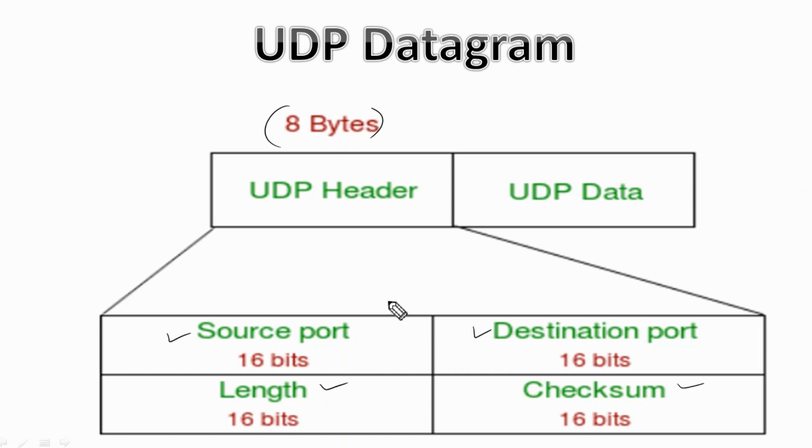In the UDP header, the source port is a 2-byte long field used to identify the port number of the source. The destination port is also a 2-byte long field used to identify the port of the destination packet.